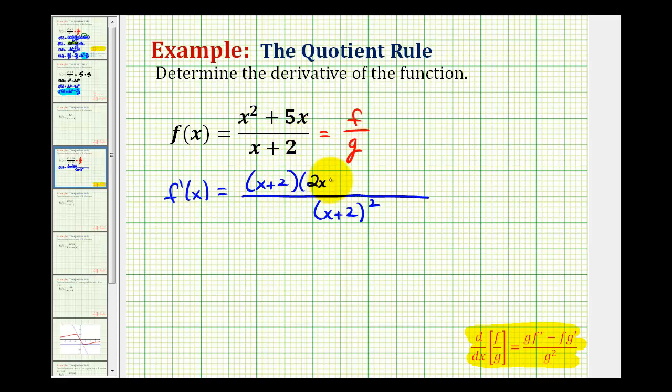which will be two x plus five minus f, which is x squared plus five x times g prime, which is one.